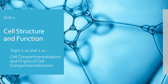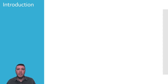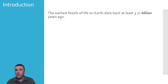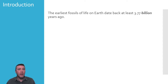Welcome to the final video for Unit 2 on Topics 2.10 and 2.11, Cell Compartmentalization and Origins of Cell Compartmentalization. Studying the scientific origin of life on Earth is no small task. The earliest evidence of life dates back at least 3.77 billion years ago, and some evidence even suggests that the first lifeforms on Earth date back 4.3 billion years. This presentation will focus more on the origin of eukaryotic organisms.